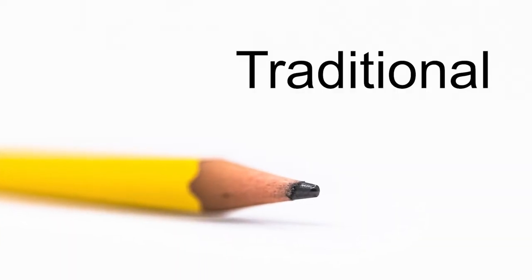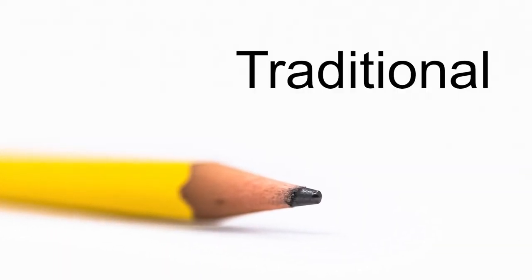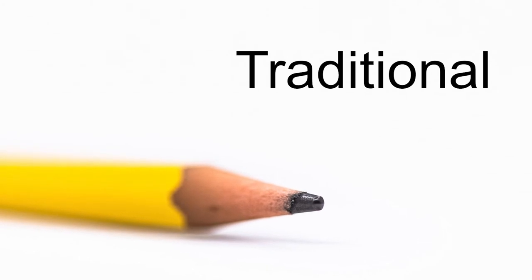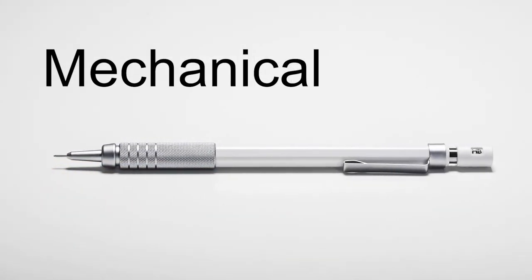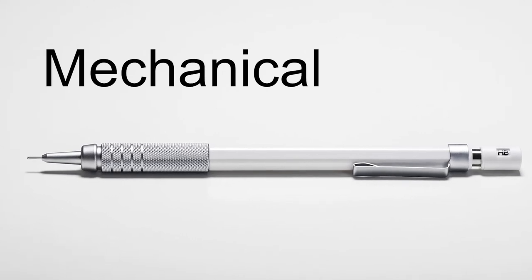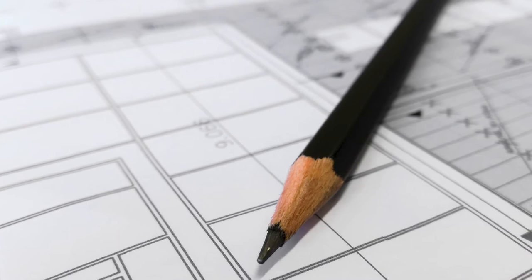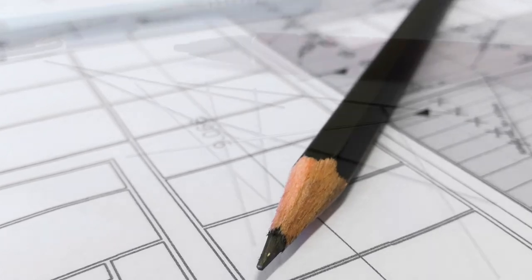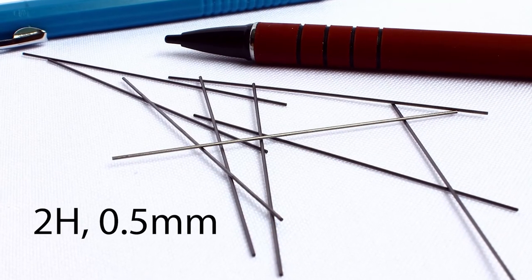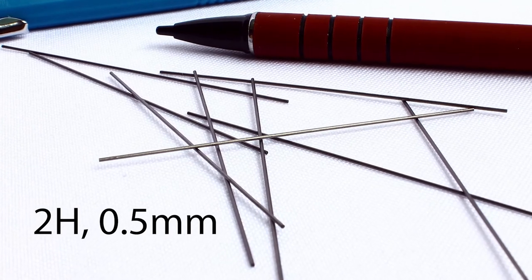Pencils can be the traditional wooden type or the mechanical type. If you go for traditional pencils, you also need a sharpener. If you go for a mechanical pencil, make sure that the lead is half a millimeter thick and that it is the correct hardness.